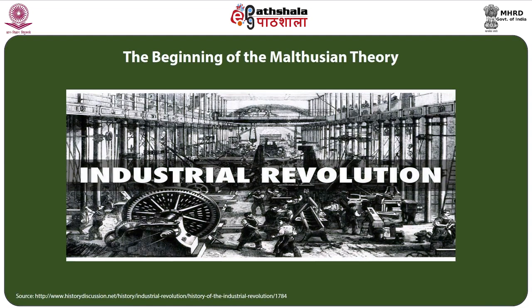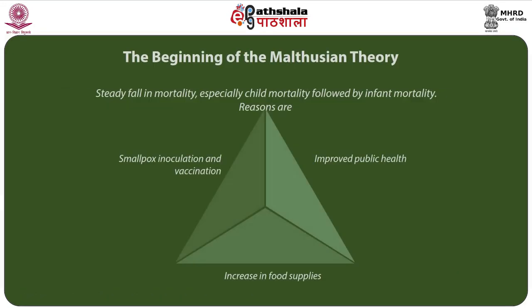The beginning of the Malthusian theory: let us discuss how it has been presented. Since the middle of the 18th century, population has been experiencing socio-economic and political changes because of the industrial revolution. One of them is a steady fall in mortality, especially child mortality followed by infant mortality. The reasons for decline in mortality include improved public health, increase in food supplies owing to agricultural innovation, and smallpox inoculation and vaccination.